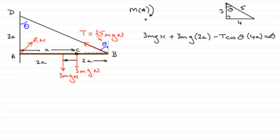It's just a simple case now of tidying this up to solve for x. We can put in our values: 3mgx plus 6mga. We know that T is 25/4 mg, so put that in as minus 25/4 mg. The cosine of θ is adjacent over hypotenuse, so it's 3/5. We multiply that with 4a, and it equals zero.